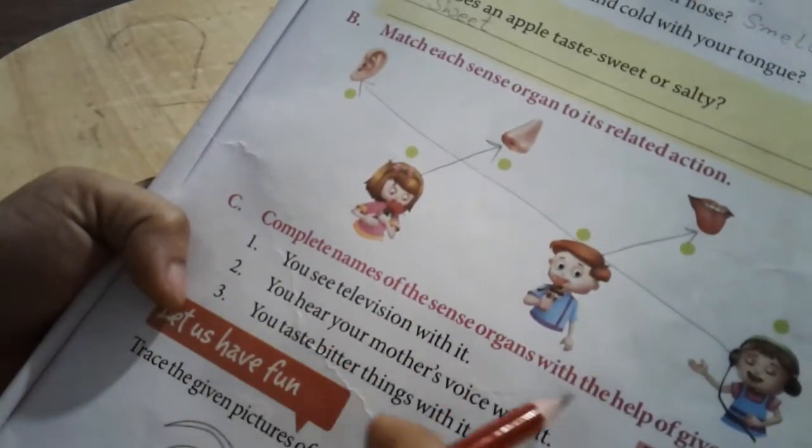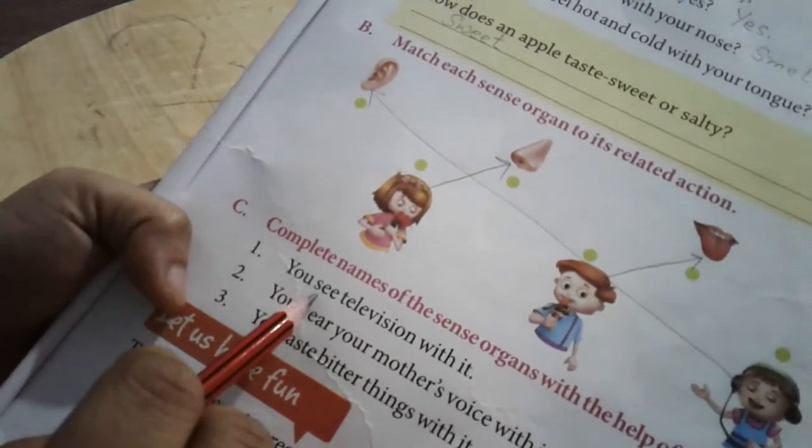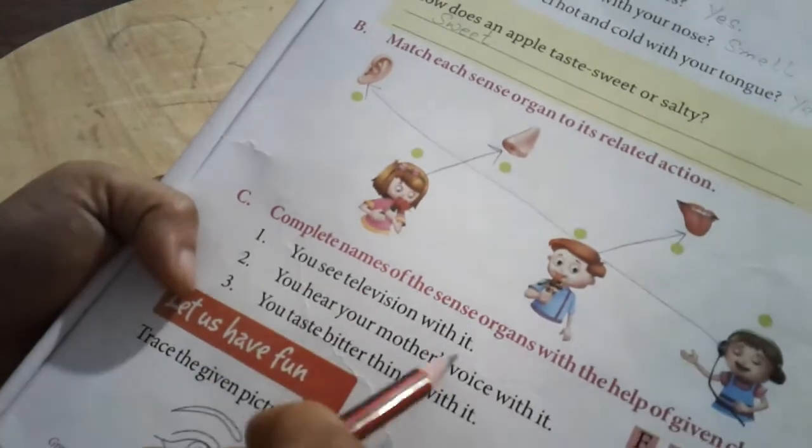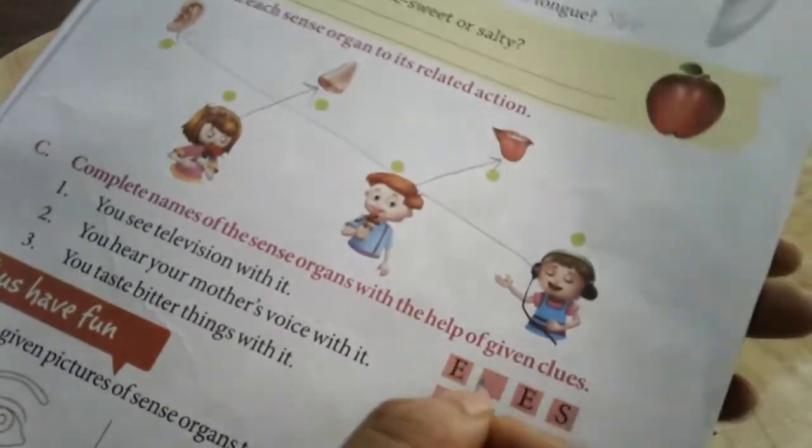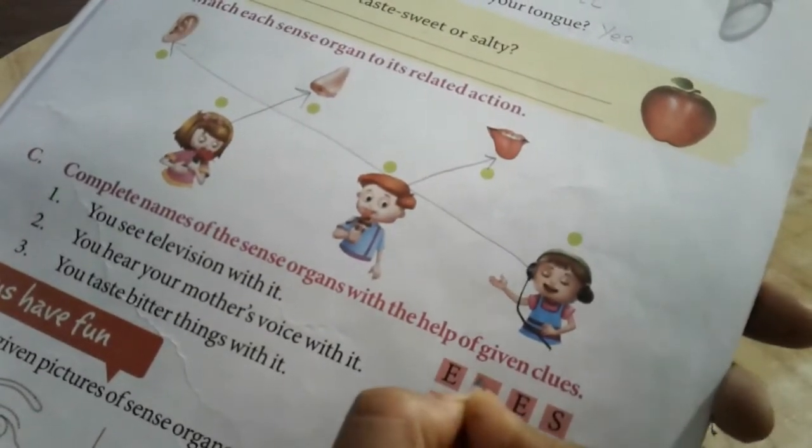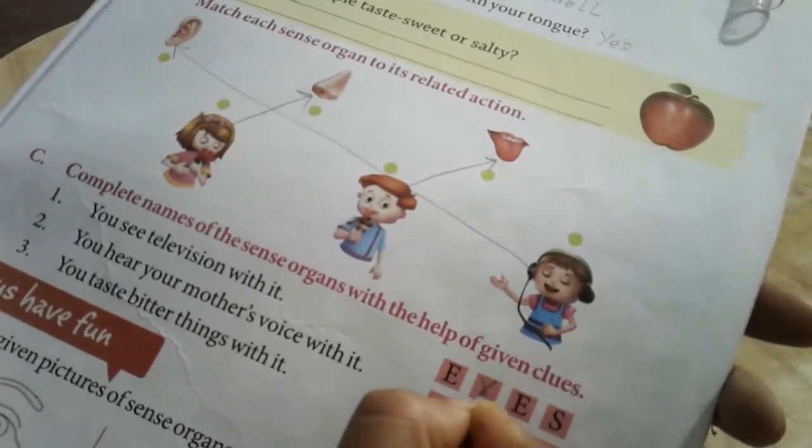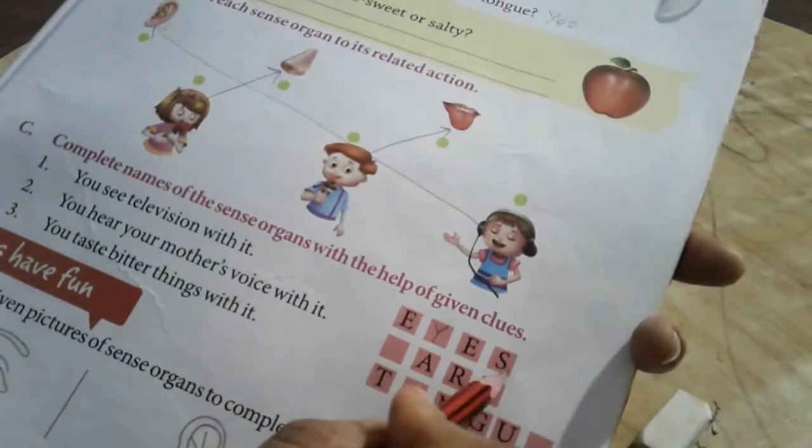Complete names of the sense organs with the help of the given clues. You see television with it. Number one. You see television with it. You watch TV. Eyes. E dash E S. So you have to fill the missing letter. What's the spelling of eyes? E Y E S. Eyes.